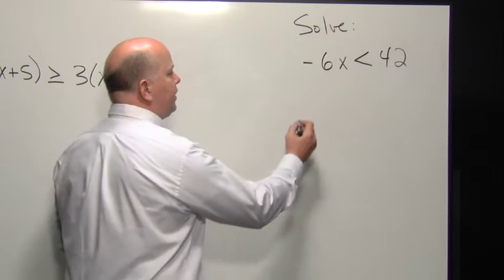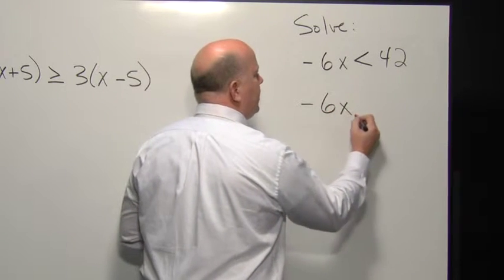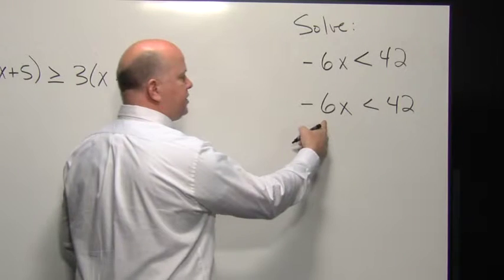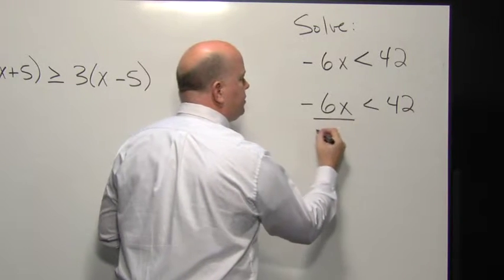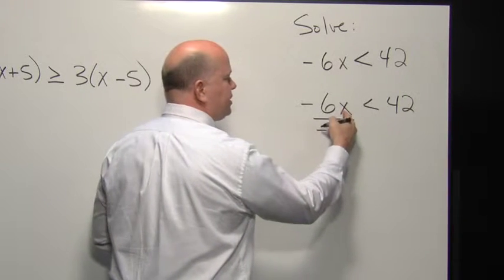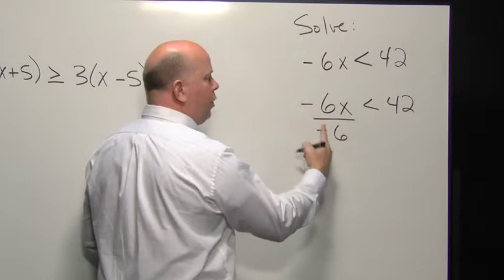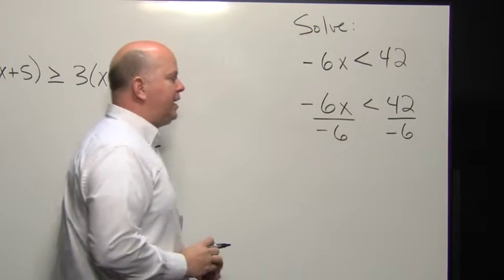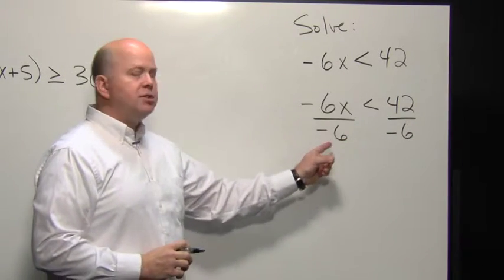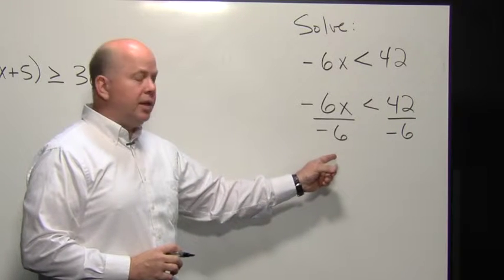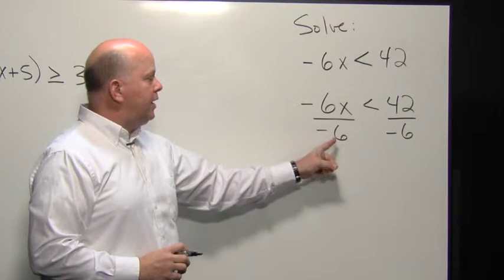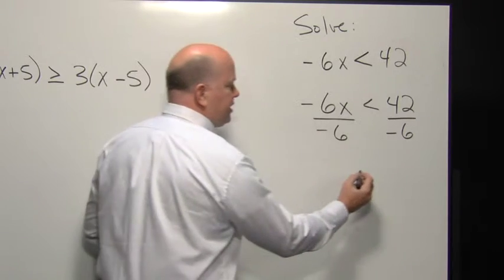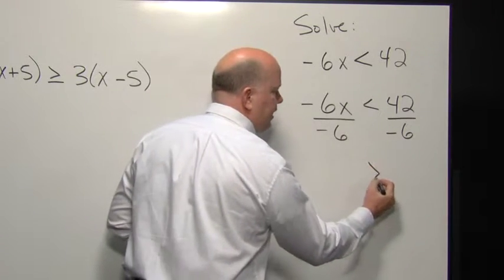This is an example we're going to solve for the variable X. We notice that this inequality has a negative coefficient of negative six. When we want to get X to have a coefficient of one, we need to divide both sides by negative six. Because of the multiplication property of inequality, we know that any time we divide by a negative number, we must reverse the sign of the inequality.